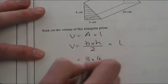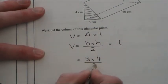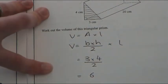The height of the triangle is four. Three times four, divided by two, is twelve, divided by two, which is six.